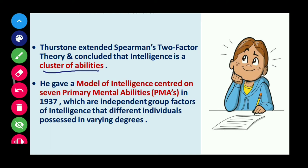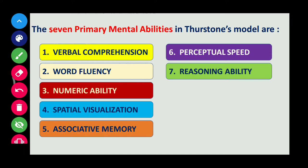So let's start with his theory. The seven primary mental abilities are: first, verbal comprehension; second, word fluency; third, numeric ability; fourth, spatial visualization; fifth, associative memory; sixth, perceptual speed; and seventh, reasoning ability.